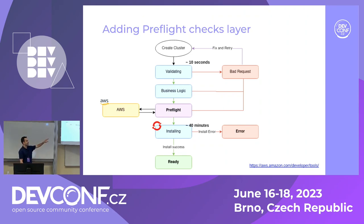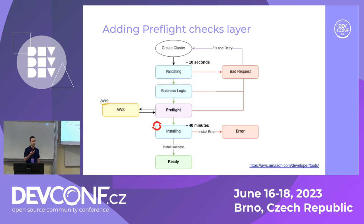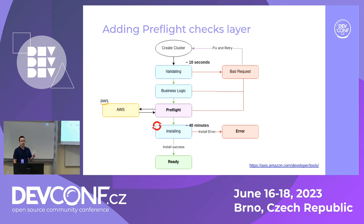From here we have two options. Option one: if anything is wrong with the account, we return a bad request. The user can adjust the AWS account and start over — we've prevented an installation failure. If everything is fine, we move to the installation phase with a much higher success rate.